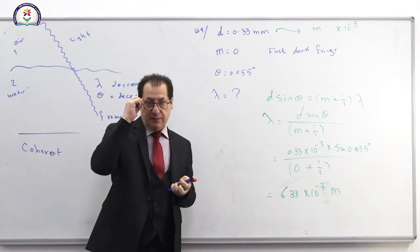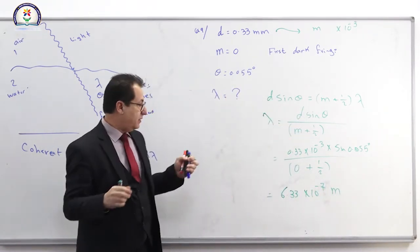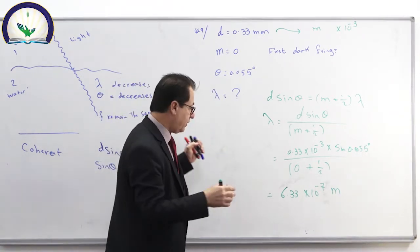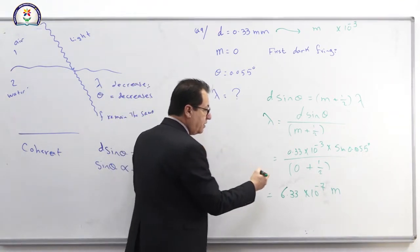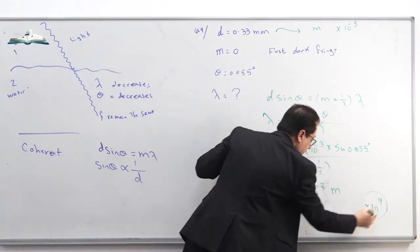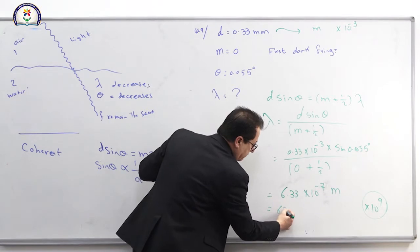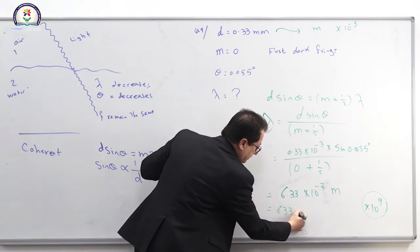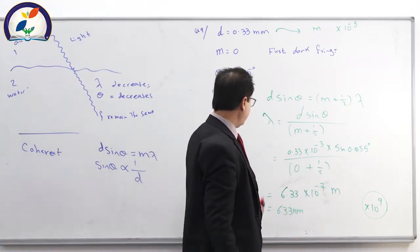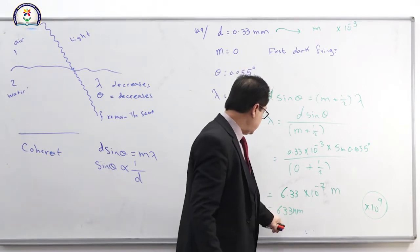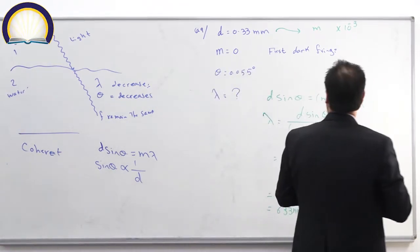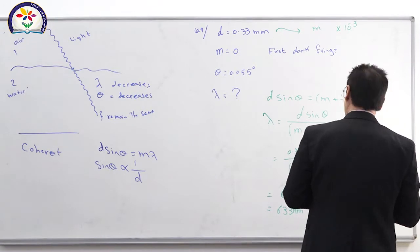The answer is 6.33 × 10⁻⁷ meters. In exam answers, wavelengths of light are usually given in nanometers, so multiply by 10⁹ to get 633 nanometers. That is the answer for question number nine.